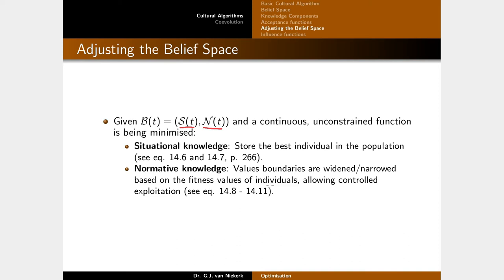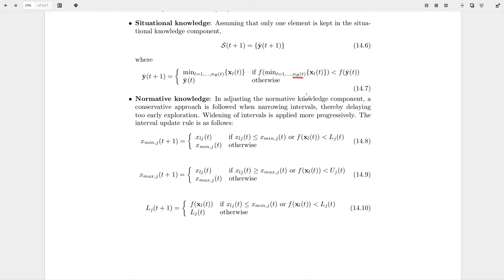Given that n_b is the set of accepted individuals chosen to influence the belief space: the situational knowledge is simply the best individual in the current population — y-hat — the one with the lowest fitness value. If you can find a better individual among the accepted set, you update y-hat to that individual; otherwise you keep the existing value. The normative knowledge stores a set of intervals with associated fitness values, and those intervals are updated progressively — widening more aggressively to encourage exploration early on, and narrowing only when fitness improves.